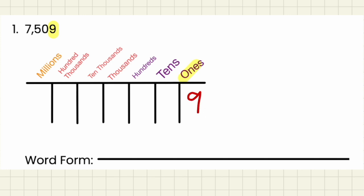So in the ones place it is a 9, in the tens place it is a 0, in the hundreds place it is 5, and in the thousands place it is 7.